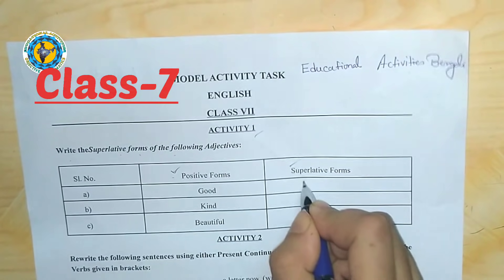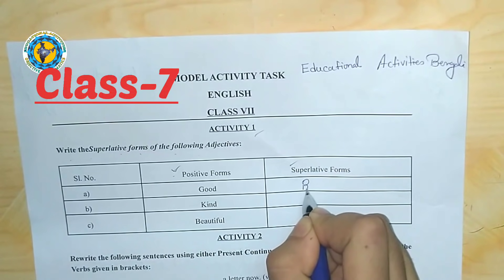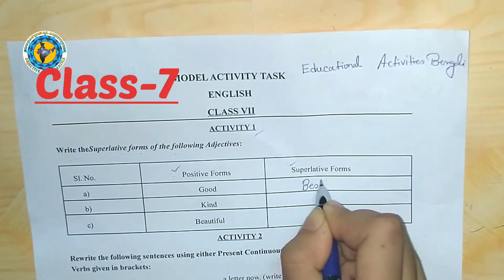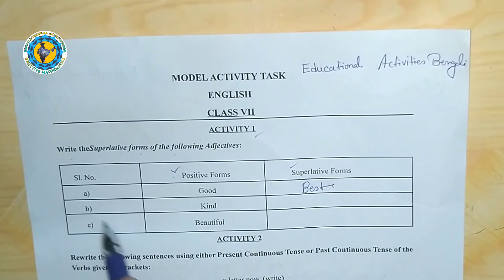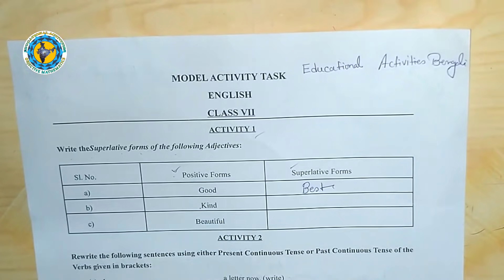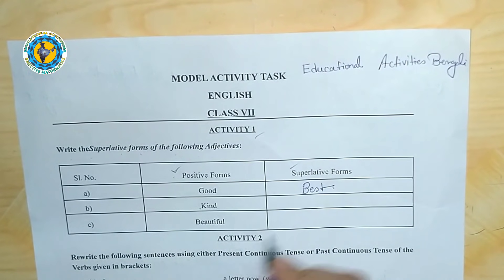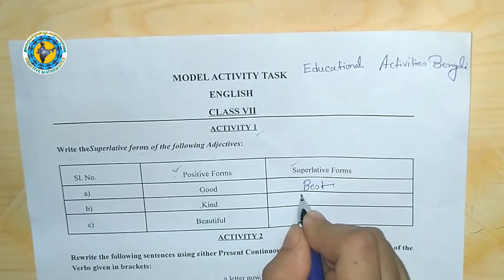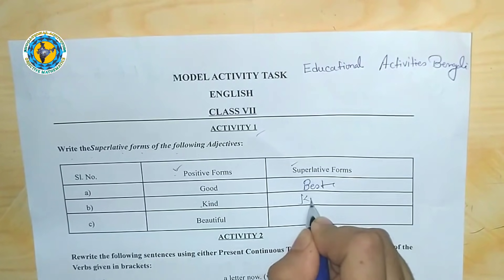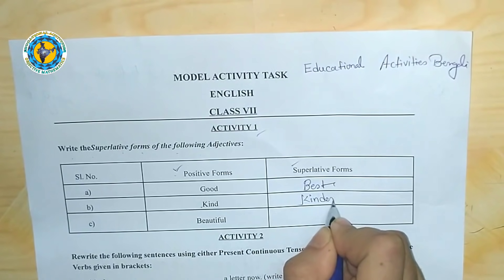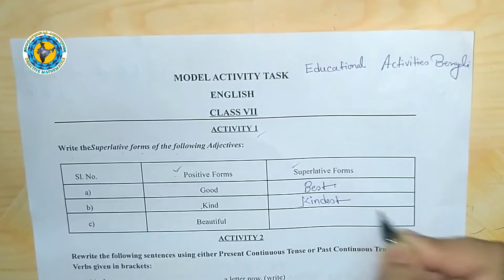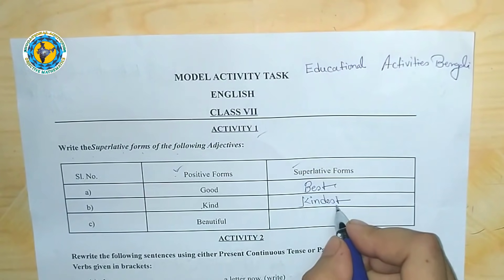Next, 'kind' — kind means doyalu. The comparative form is 'kinder' and the superlative form is 'kindest'.